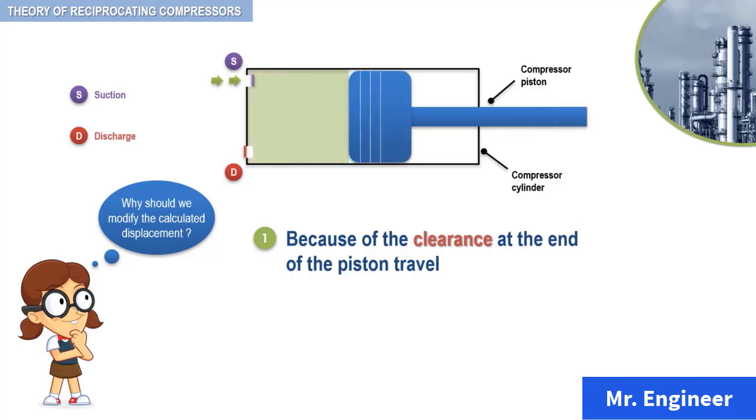The following equation reflects the expansion effect on capacity and is referred to as the theoretical volumetric efficiency. Here, F is the ratio of discharge compressibility to inlet compressibility. Rp is the pressure ratio.